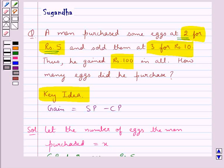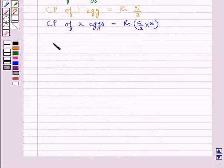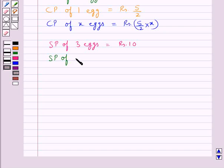And we are also given that the selling price of 3 eggs is Rs. 10. So from here we have selling price of 1 egg is equal to Rs. 10 upon 3 and selling price of X eggs is equal to Rs. 10 upon 3 into X.